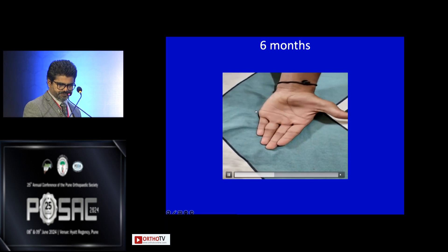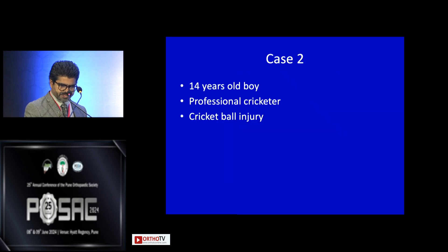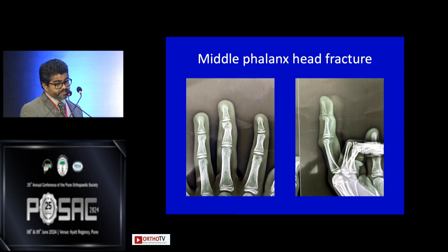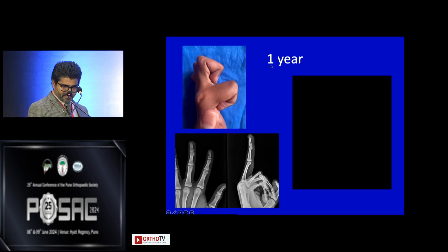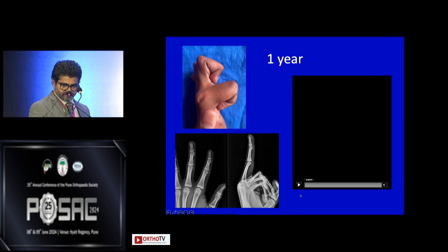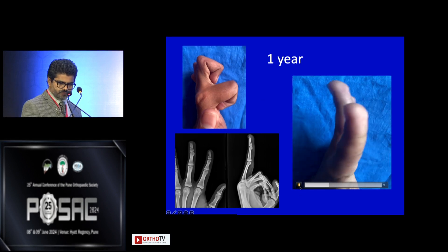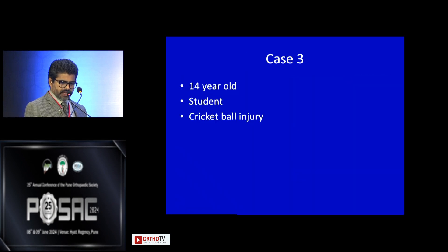He returned to cricket with good movement. Another case: a 14-year-old professional cricketer with a cricket ball injury resulting in a middle phalanx head fracture. Same technique — Kapanji K-wire with external fixator. The one-year result is excellent with absolutely good range of motion and good healing of the fracture.